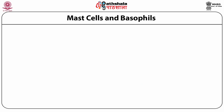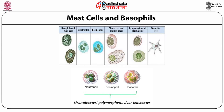Let us now look at the white blood cells formed from the common myeloid progenitor in more detail. The white blood cells or leukocytes formed from the common myeloid progenitor are monocytes, immature dendritic cells, neutrophils, eosinophils, and basophils. Neutrophils, eosinophils, and basophils are called granulocytes as their cytoplasmic granules have characteristic staining properties.